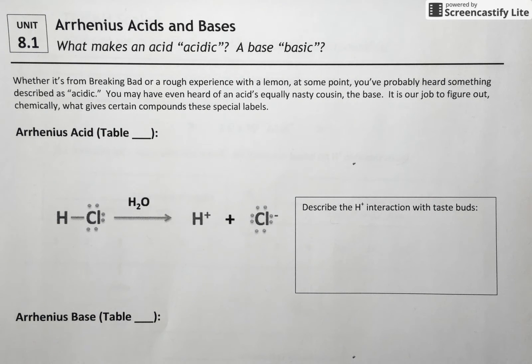Arrhenius refers to a Swedish chemist physicist who proposed certain definitions for what an acid is and does and what a base is and does. So today we're going to look at those definitions that he proposed.